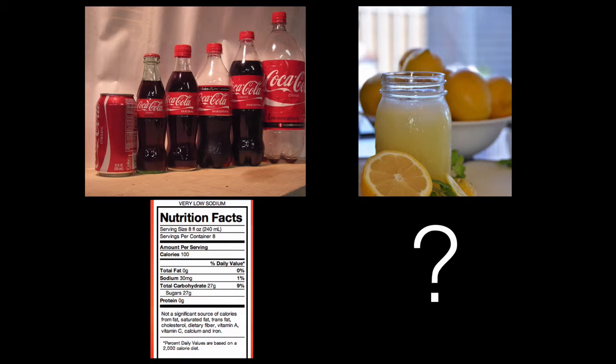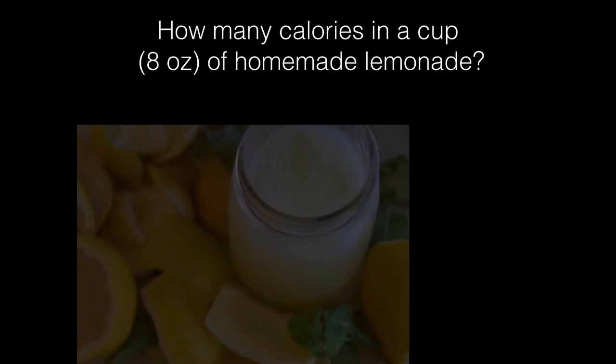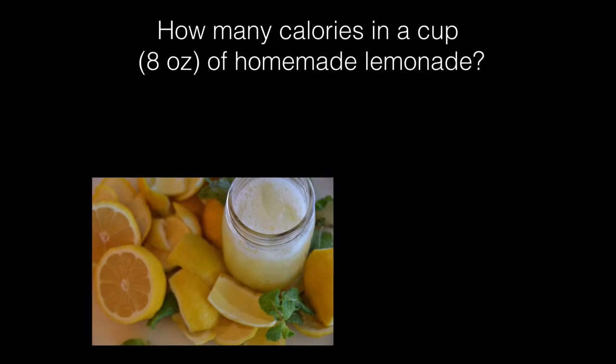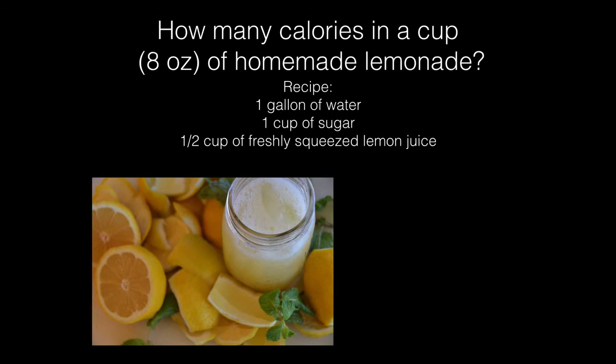So of course we have to figure out what it is for the lemonade. We have to figure out how many calories are in one cup of homemade lemonade. Let's create a recipe. The recipe we're going to use is one gallon of water, one cup of sugar, and one half cup of freshly squeezed lemon juice.